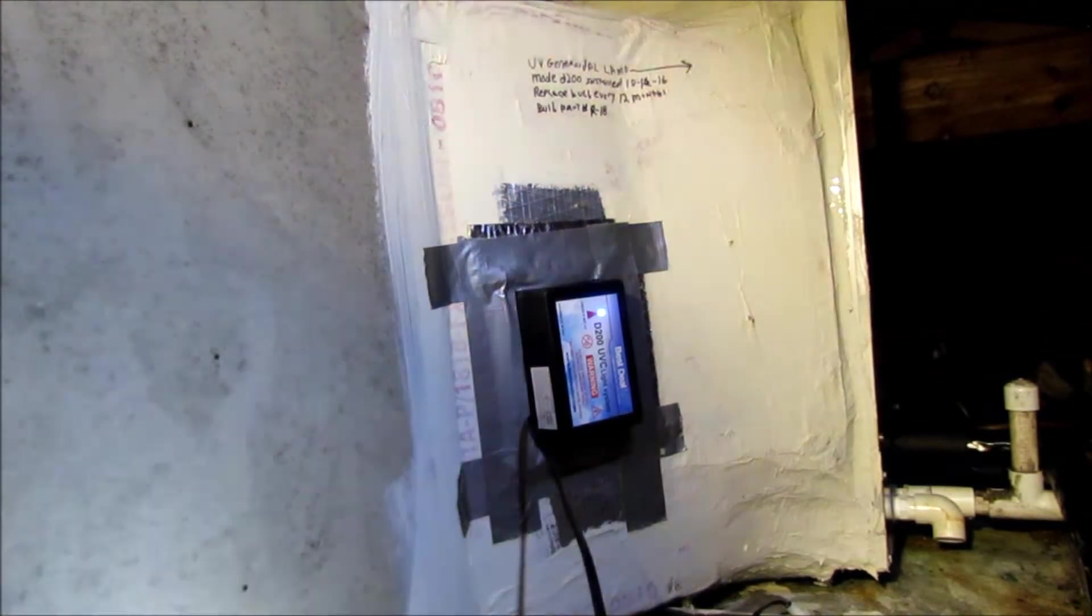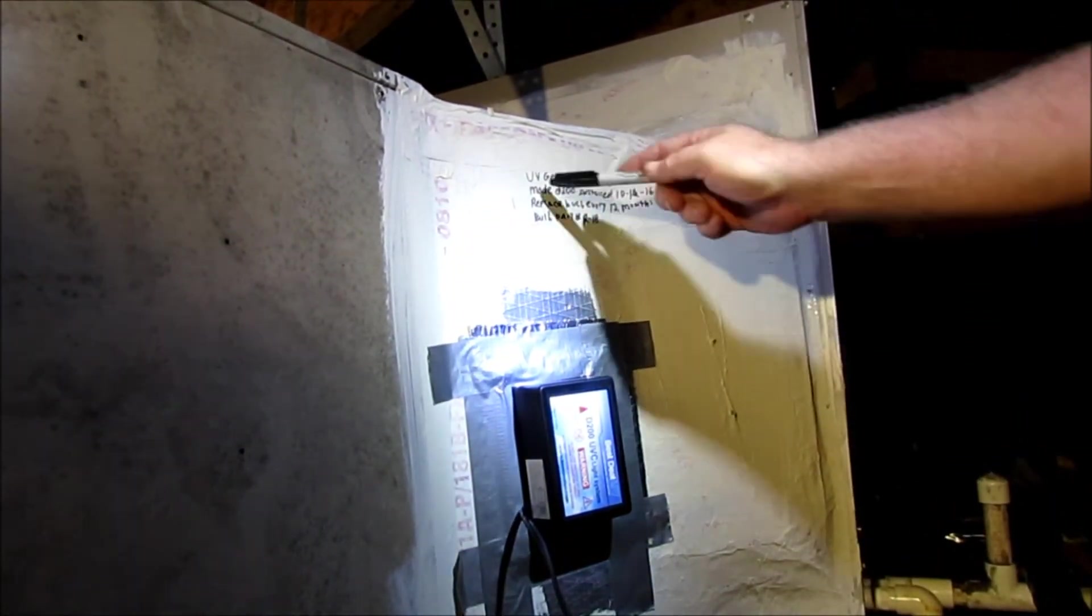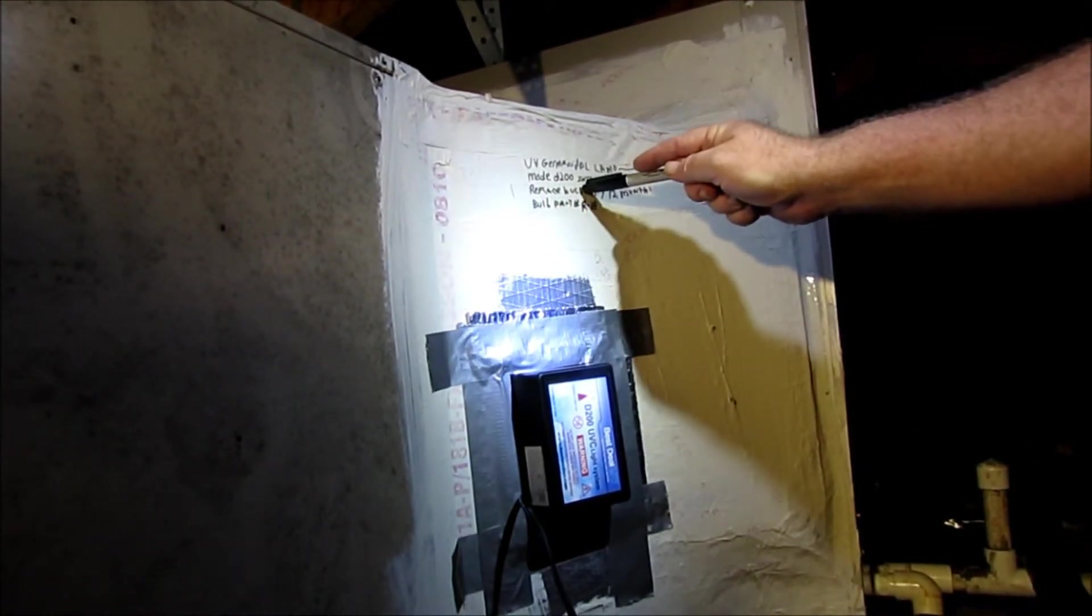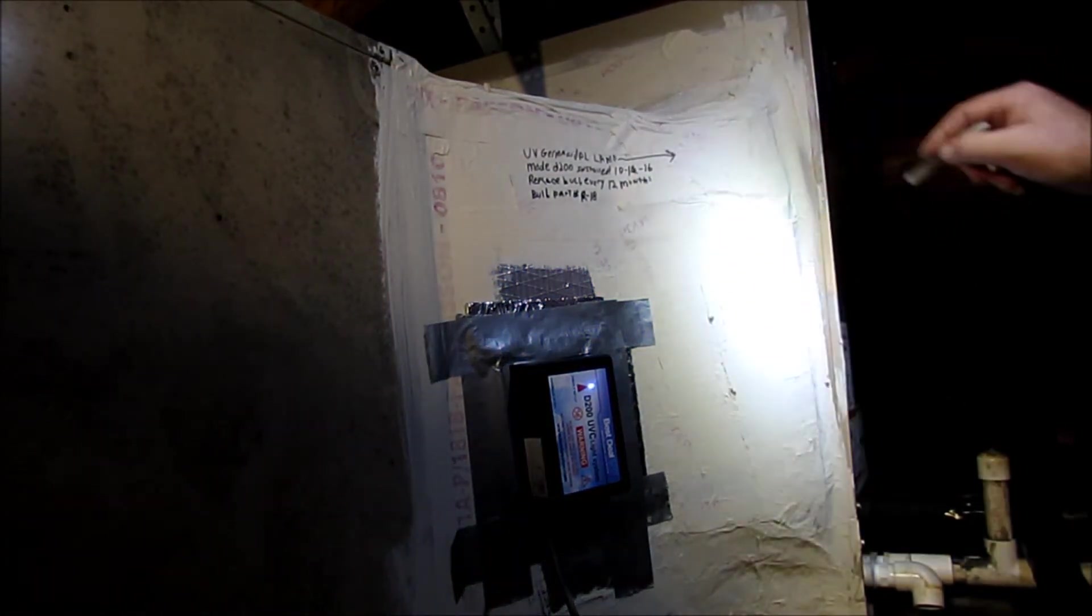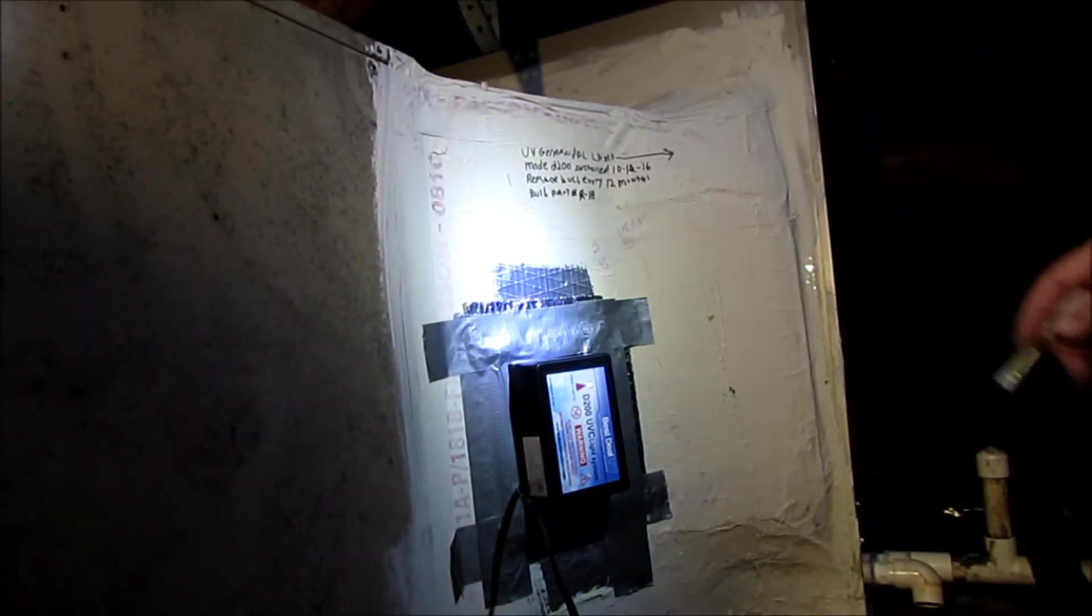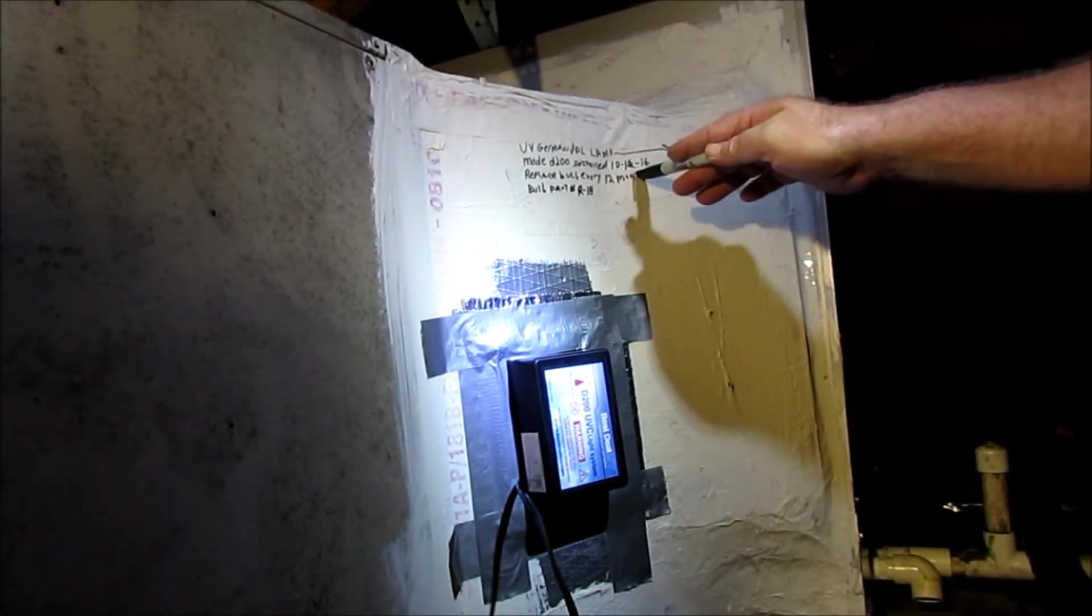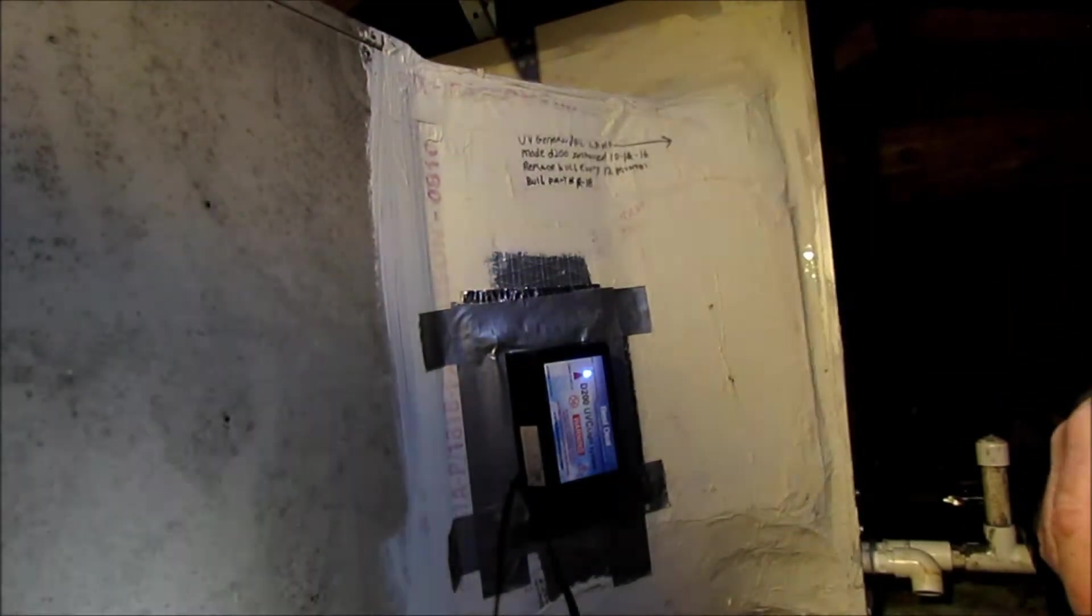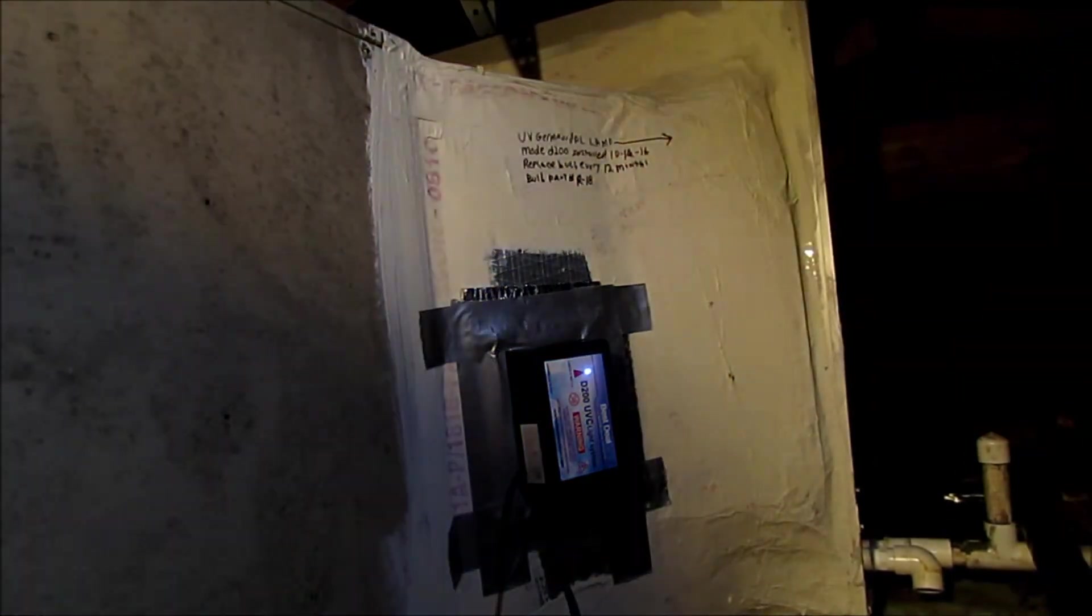Now, if you notice up here at the top, I wrote here what this is, UV Germicidal Lamp, Model D200, and the date I installed it. I have an arrow point here because I've got the other one on the other side. I've got two of them up here, and you're supposed to replace the bulb every 12 months with that information there too. One of the bulb part numbers is R18, but you should be able to find this bulb number by typing in the model number.